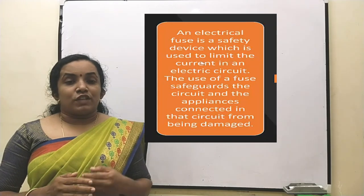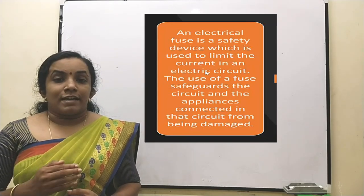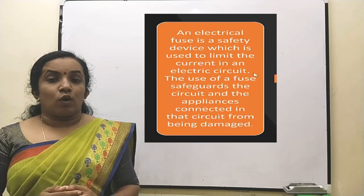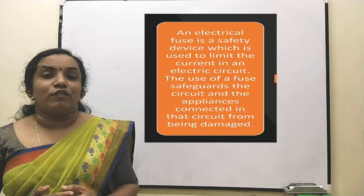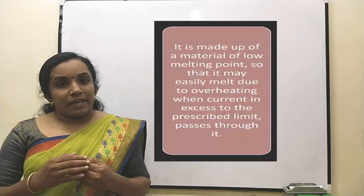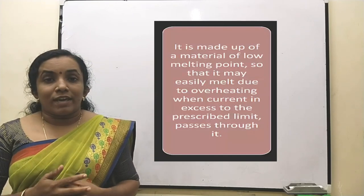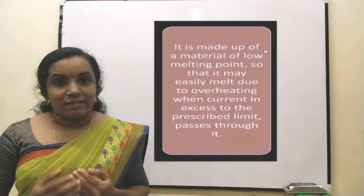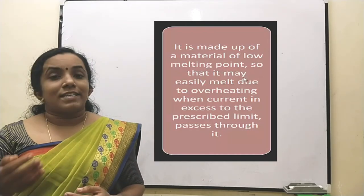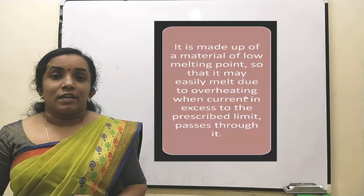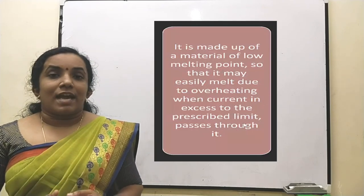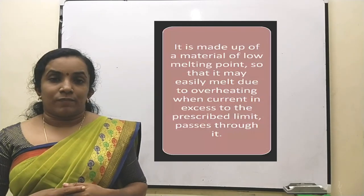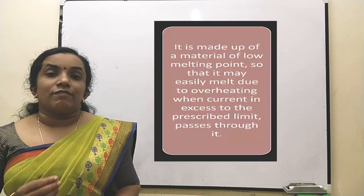The fuse breaks the circuit if there is any short circuiting or when the circuit gets overloaded due to large withdrawal of current. A fuse wire is made of an alloy of lead and tin, which has a low melting point and high resistance. Due to its high resistance, if the current exceeds the limit, the fuse wire gets heated, and due to its low melting point, it melts and breaks the circuit — this is how a fuse wire safeguards the house.